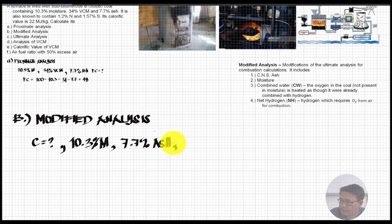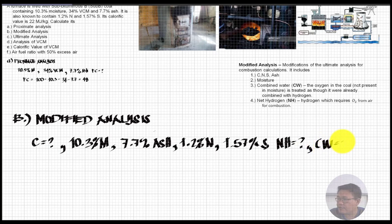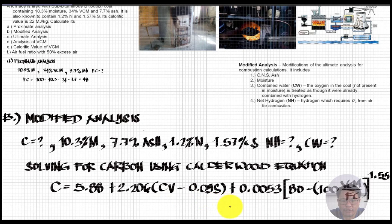We also have 1.2 percent nitrogen and 1.57 percent sulfur from the problem. What is not given — and therefore unknown — is the carbon content and the net hydrogen, as well as the combined water. To determine the carbon, we will employ the Calderwood equation.